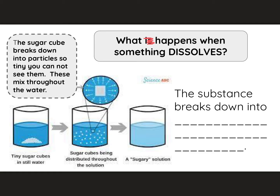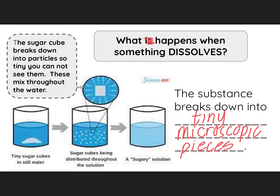So what happens when something dissolves? When something dissolves, the substance breaks down into tiny microscopic pieces. Let's take a look at an example. So here, if we put a sugar cube into water, you might notice it at first. But soon, you won't be able to see the particles of the sugar. That's because the sugar molecules are being broken down so small and mixing in between the water molecules that you won't be able to see them. That doesn't mean that they're not there. It just means they're too small to see.